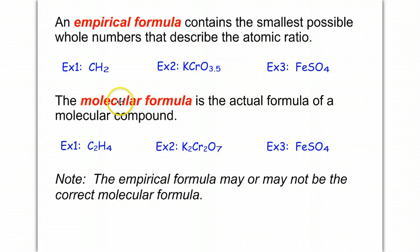The molecular formula is the actual formula of a molecular compound. So while example 1 is the empirical formula CH2, the molecular formula for that same compound is actually double that, C2H4. Notice if we multiply each of these by 2, we get the molecular formula.